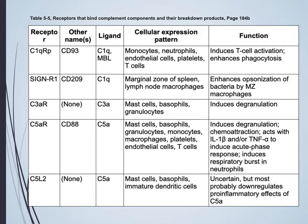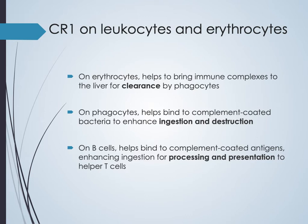CR1 is found on leukocytes and erythrocytes. On red blood cells, it helps bring immune complexes to the liver for clearance via phagocytosis. On phagocytes, CR1 allows binding to complement-coated bacteria, facilitating phagocytosis and pathogen destruction. On B cells, CR1 helps bind antigens for enhanced processing and presentation to T helper cells.